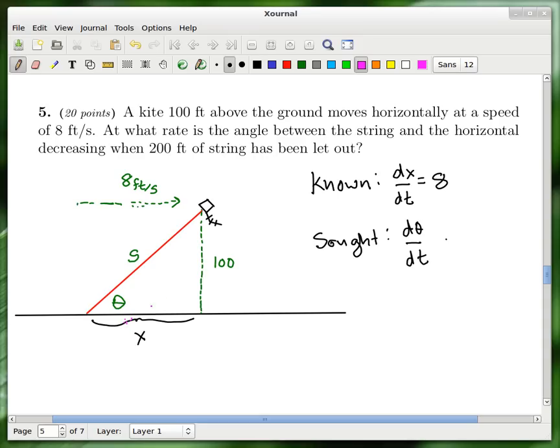And the second sentence says, at what rate is the angle between the string and the horizontal decreasing when 200 feet of string has been let out? So I put theta in here, this is what they mean by the angle between the string and the horizontal. This black line is supposed to be the ground. So it makes a triangle. Frequently in these questions you end up with some kind of triangle. This side is 100 because they tell you that the kite is 100 feet above the ground.